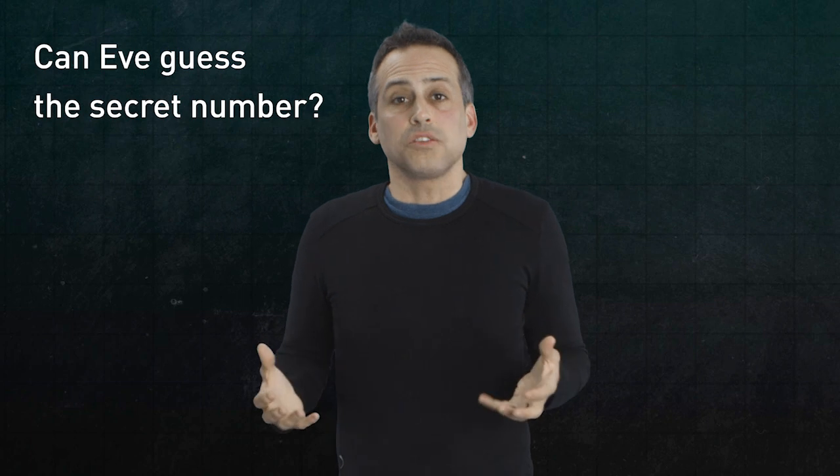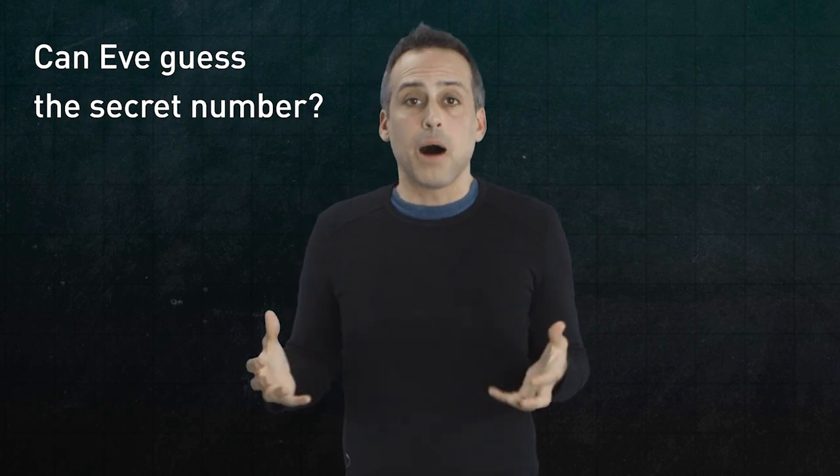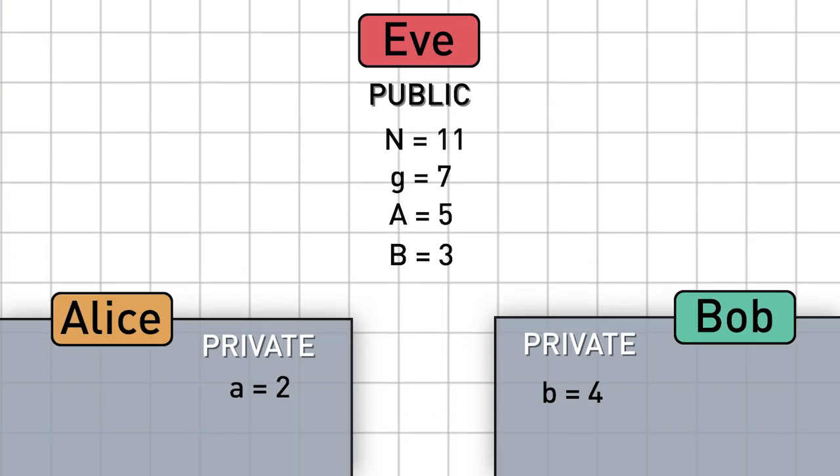So can Eve do this? Can Eve guess Alice and Bob's shared number? In our simple example, yes, but in general, no. And even our simple example can give you insight into why. Think about it like this.